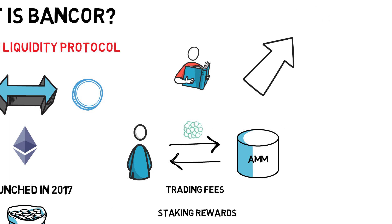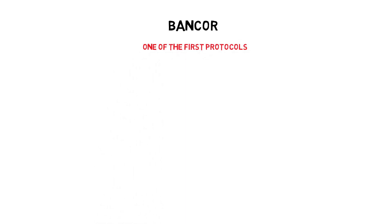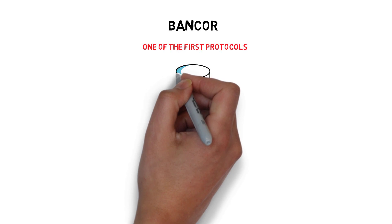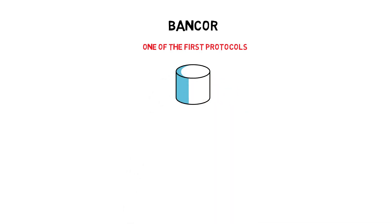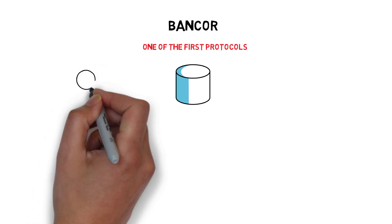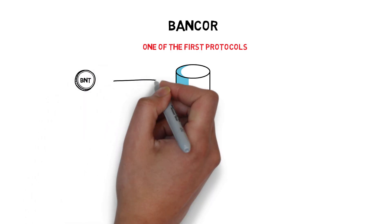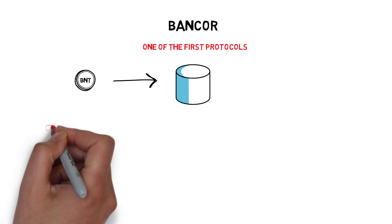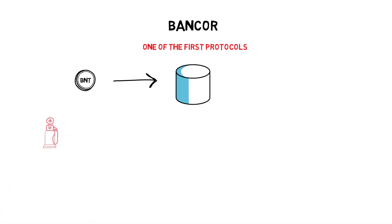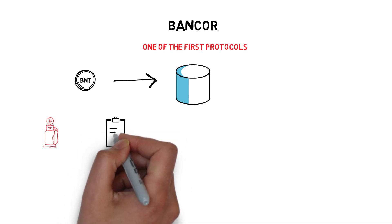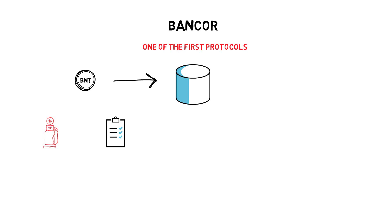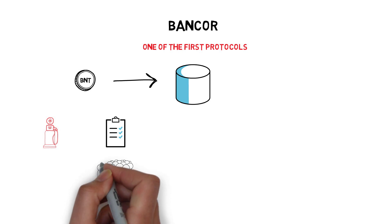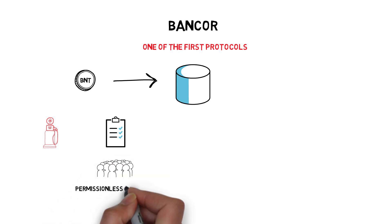Although Bancor was one of the first protocols that implemented liquidity pools, it didn't get as much traction as some of their competitors. There were a few reasons for this — mainly the requirement to use an additional BNT token to provide liquidity to every pool, high gas fees to execute contracts, and a harder process to list new tokens. Some of these problems were already addressed even before launching V2; for example, the Bancor community created permissionless interfaces for listing new coins.